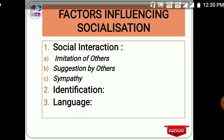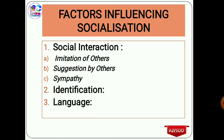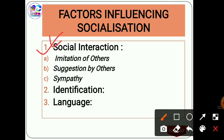There are basically three factors of socialization: social interaction, identification, and language. Social interaction is very important — it involves interacting socially with family, neighborhood, school, friends, classmates, and community in an organized psychological process. Within social interaction, there are three types: imitation of others, suggestion by others, and sympathy.